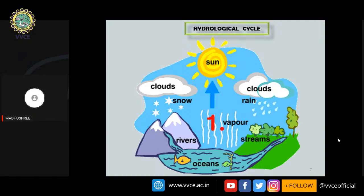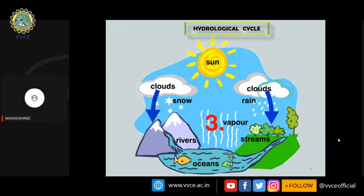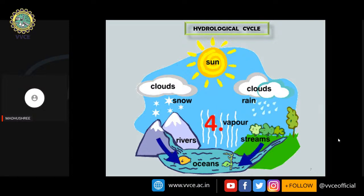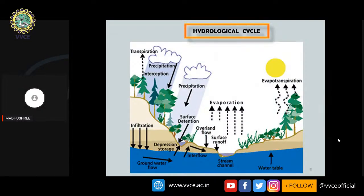To understand precipitation, we first need to know the concept of the hydrological cycle. It is a continuous process — water evaporates, forms clouds, then falls back to earth in various forms of precipitation, and the cycle repeats. The important terminologies include precipitation, evaporation, evapotranspiration, surface detention, transpiration, and infiltration.